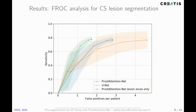This figure shows performance of our model for clinically significant cancer detection in comparison to U-Net. Prostate Attention Net achieves around 76% sensitivity at 2.5 false positives per patient, while U-Net reaches around 66% sensitivity at the same rate. The green curve shows performance if we consider only slices containing at least one lesion; within this setup, we can reach a sensitivity of 60% at 1 false positive per patient, which is on par with the state of the art.